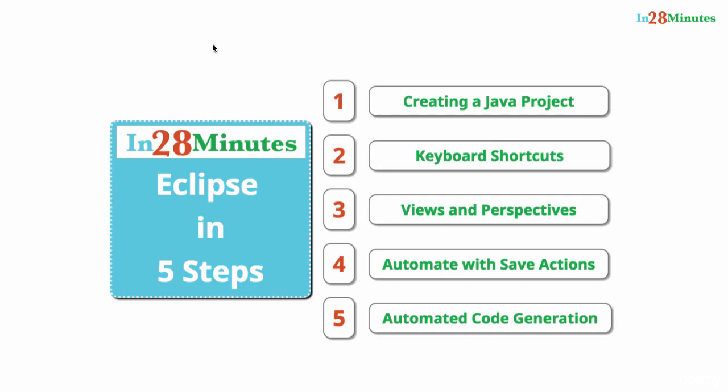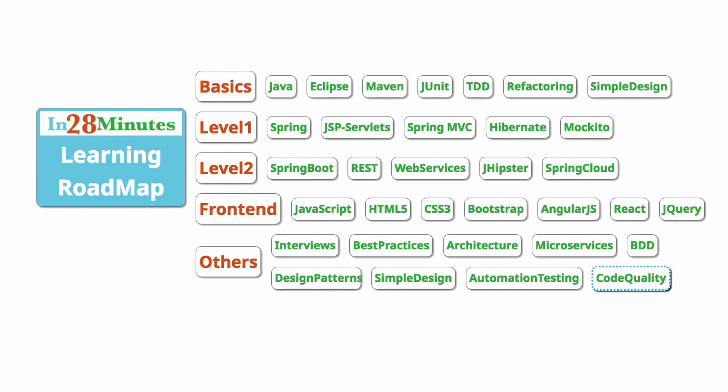We will start with creating a simple Java project. We will look at keyboard shortcuts, and concepts like views and perspectives, before moving into save actions and also looking at all the automated code generation features in Eclipse. I'll see you in the first step.